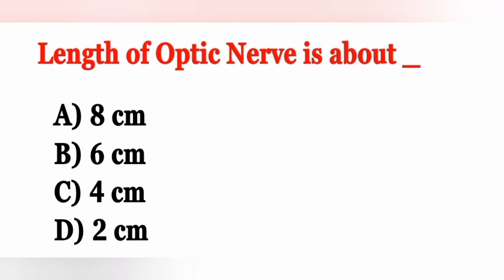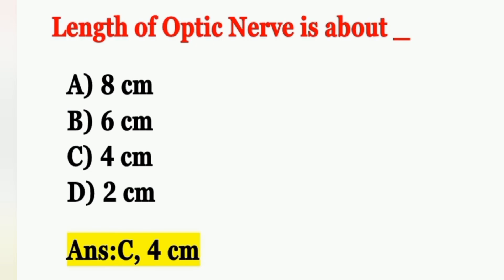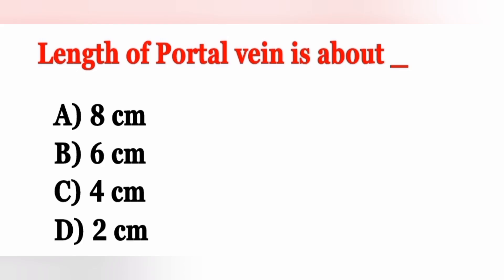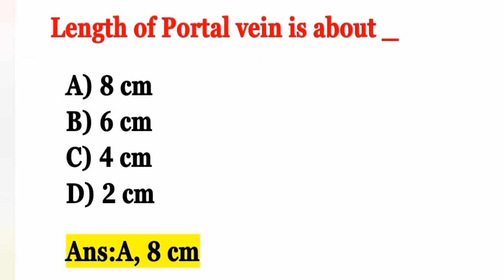Next question: The length of the optic nerve is about — Option A: 8 cm, Option B: 6 cm, Option C: 4 cm, Option D: 2 cm. The length of the optic nerve is about 4 cm, so Option C is the correct answer. Note: the length of the portal vein is about 8 cm, making Option A correct for that.